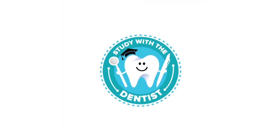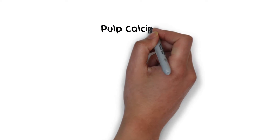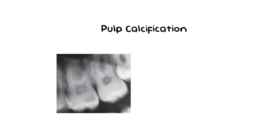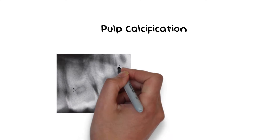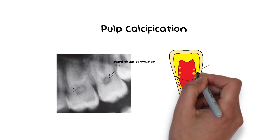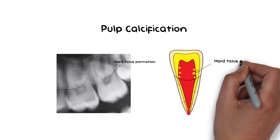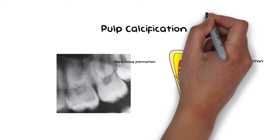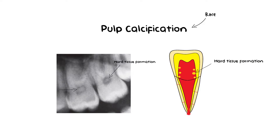Hello and welcome back everyone. Pulp calcification is a process in which there is hard tissue formation seen inside the pulpal space. These instances of pulp calcification are rare but they do occur, and you will most likely encounter them in your dental practice, so it is important to know about them.